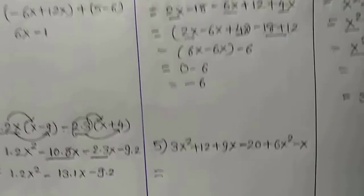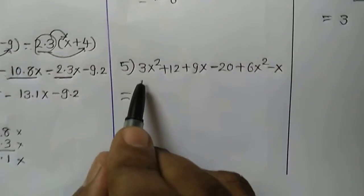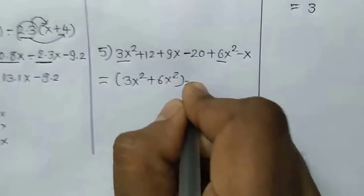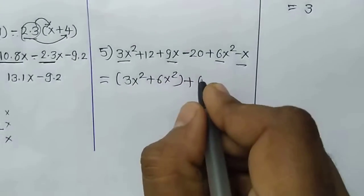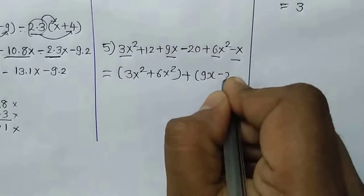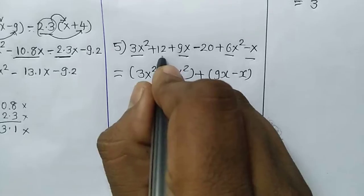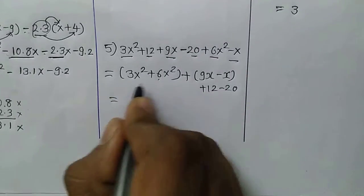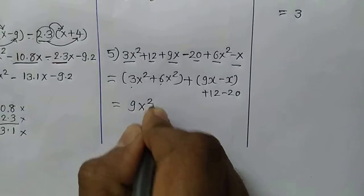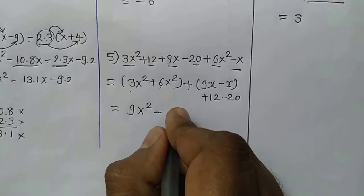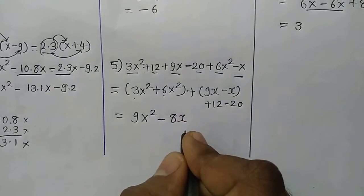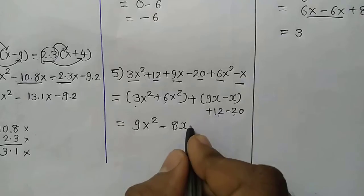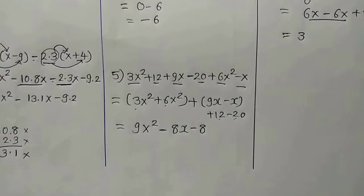Let us focus on the next example. Gathering like terms: 3x squared plus 6x squared, plus other like terms. The coefficient of x is 9, giving 9x, minus 1 more x. The remaining constant terms are plus 12 and minus 20. 6x squared plus 3x squared is 9x squared. 9x minus 1x gives minus 8x. And 12 minus 20: 20 minus 12 is 8, and the greater term has a minus sign, so it is minus 8. This is how you can simplify algebraic expressions very easily.